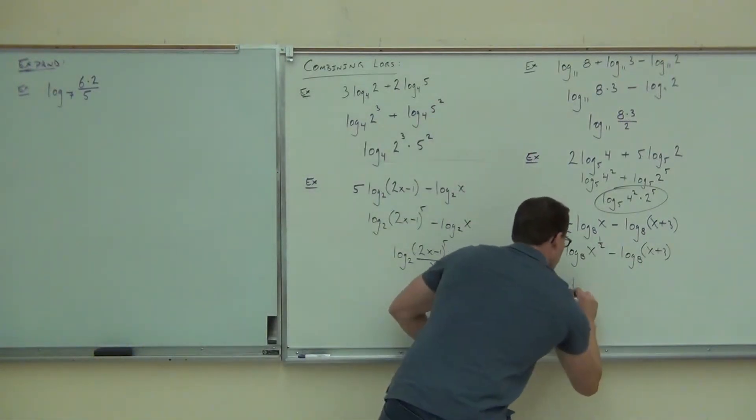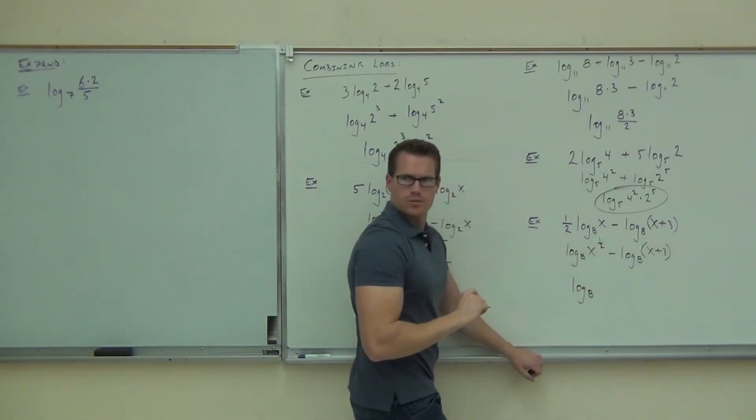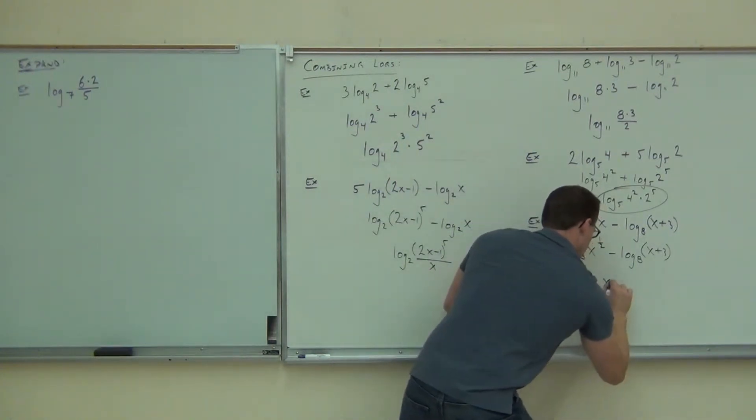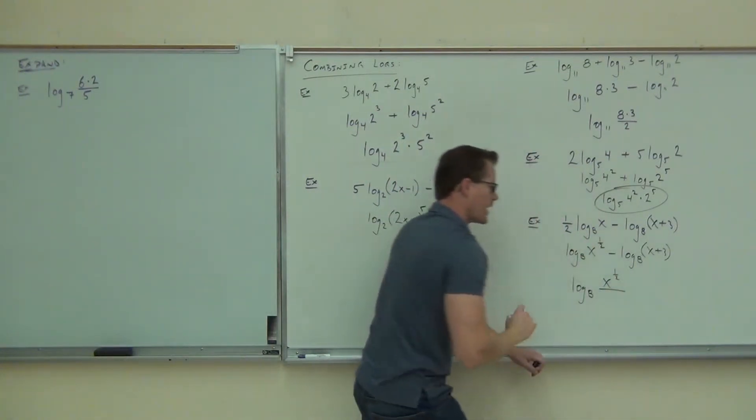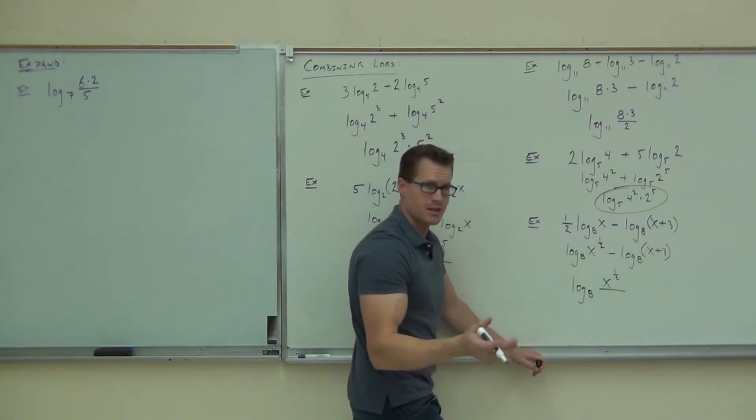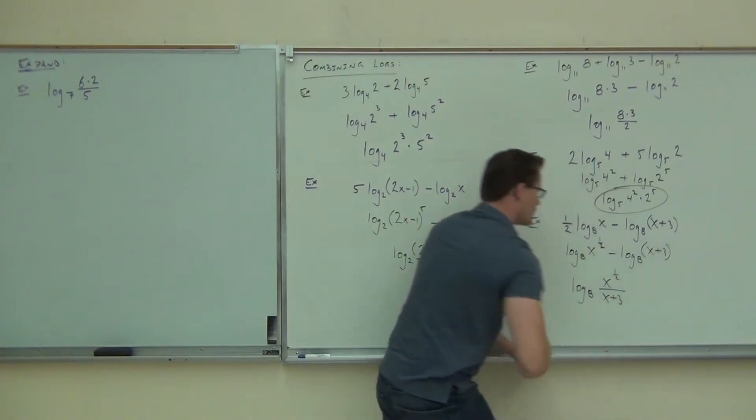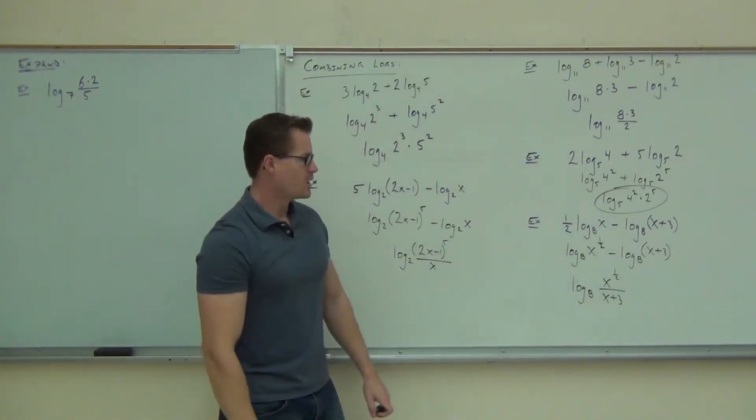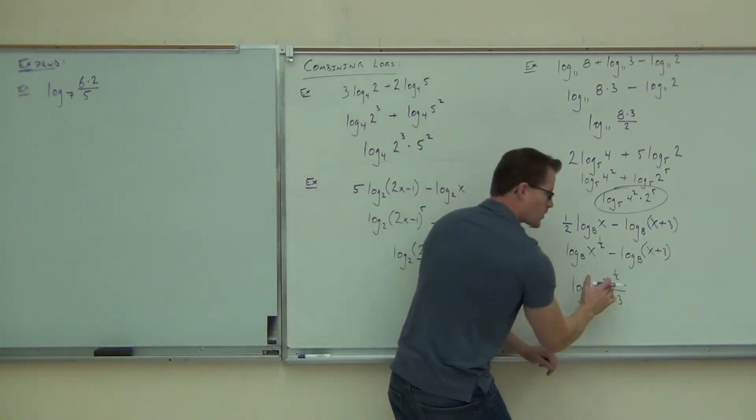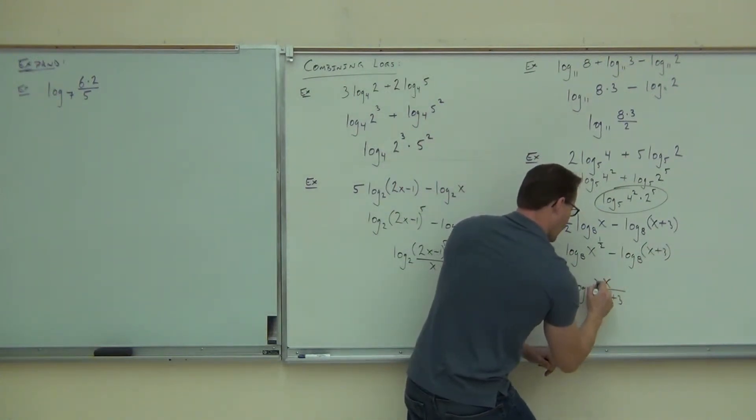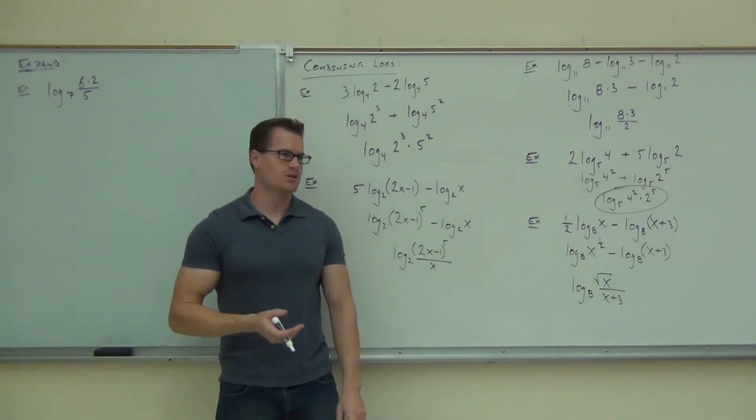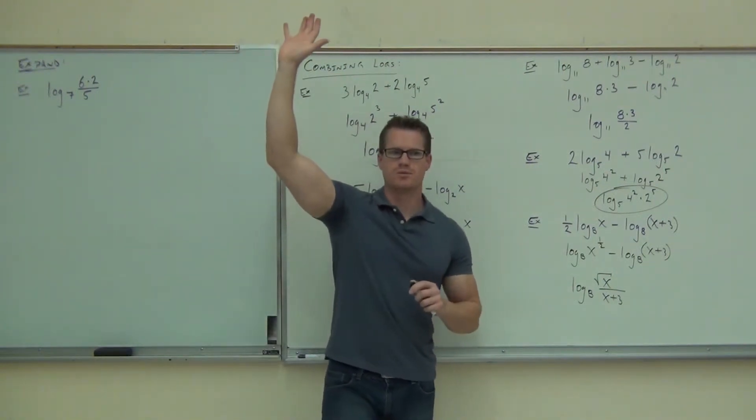Sure. Is it going to be a product or a quotient? So we should have one logarithm. What's going to be on the top of our logarithms? Sure, x to the 1 half. Or you could write square root of x. That's fine because x to the 1 half is a square root of x. Just like that. So either the 1 half right there, or if you want to be fancy about it, you can do that too because that 1 half power is a square root. Are you feeling okay with this combining of logarithms?